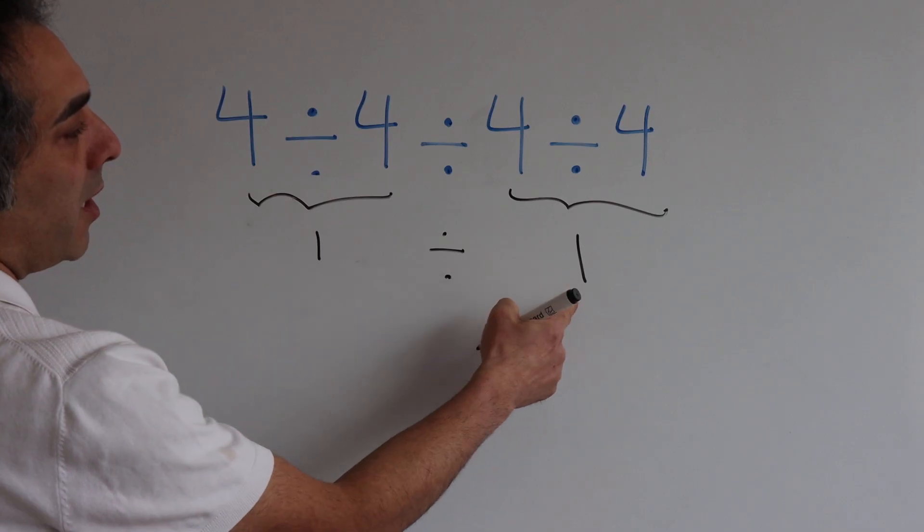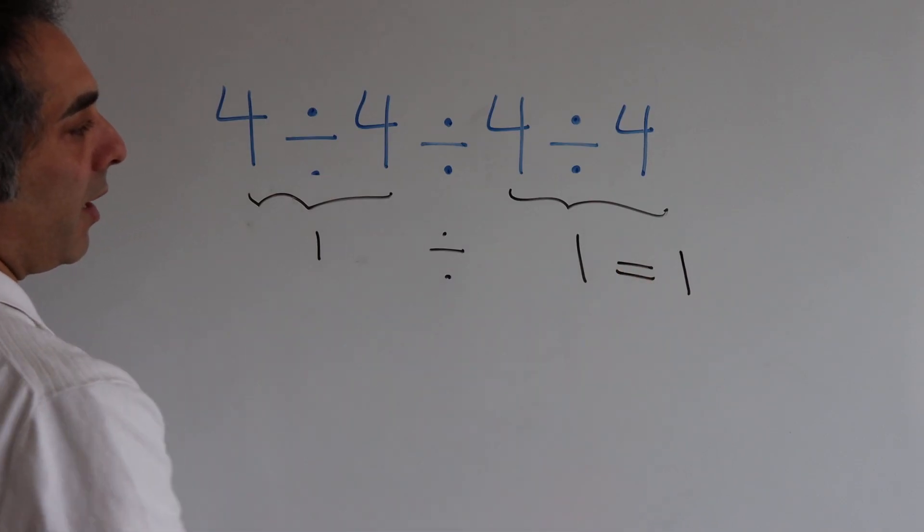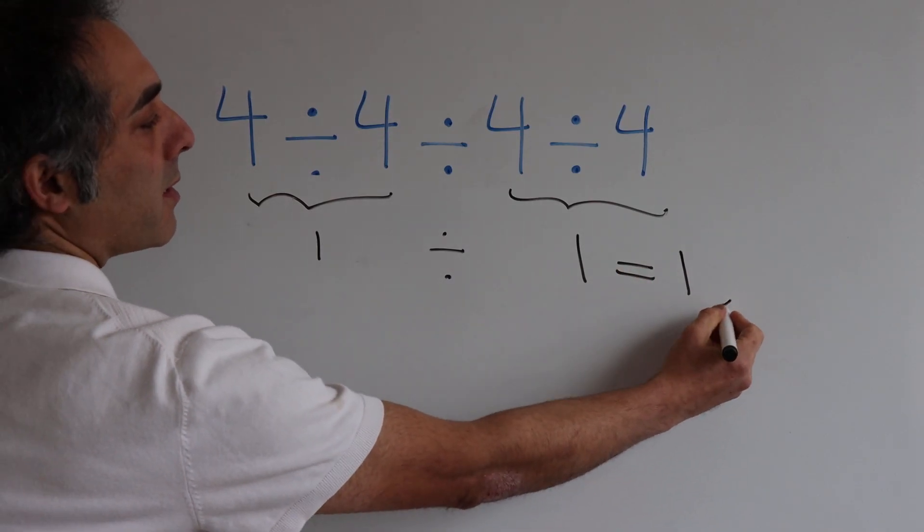divide on 1 is 1. But this result is not correct.